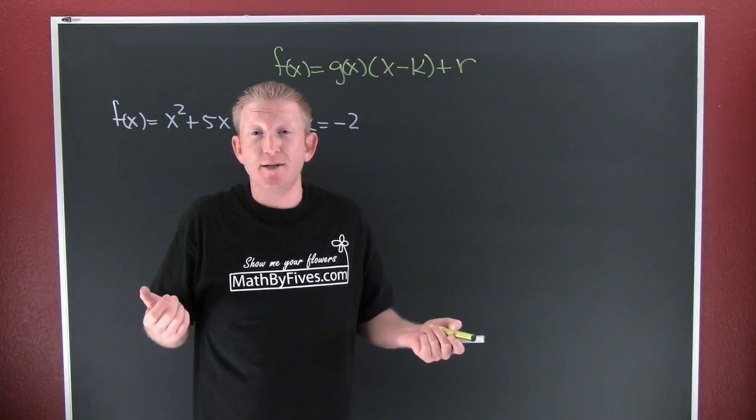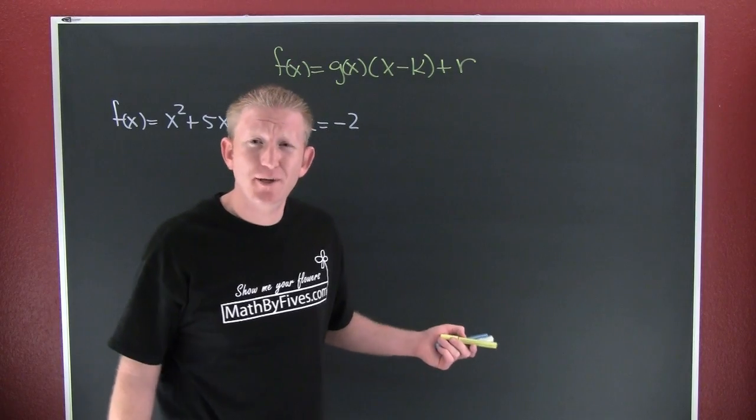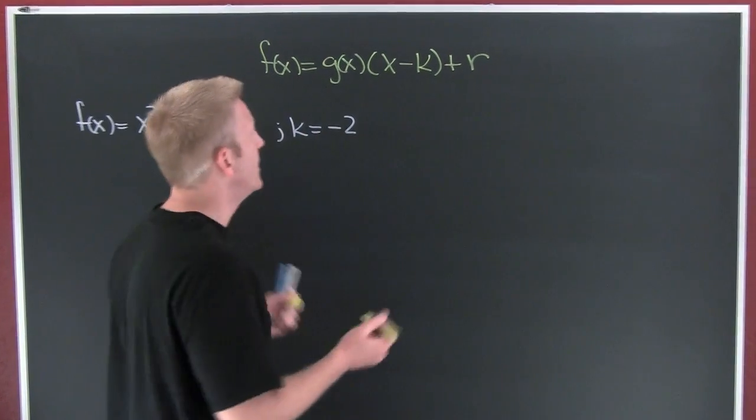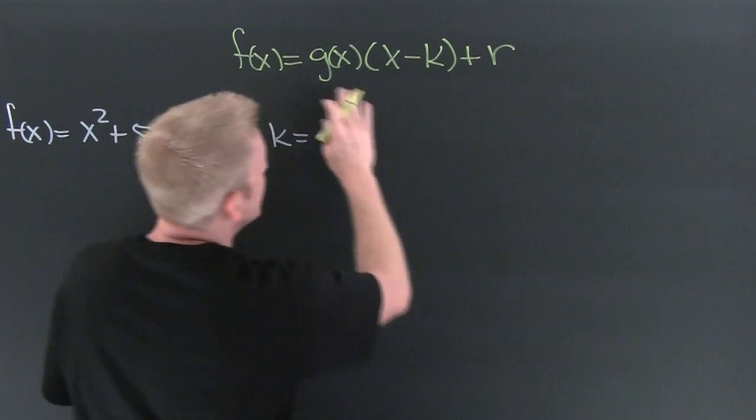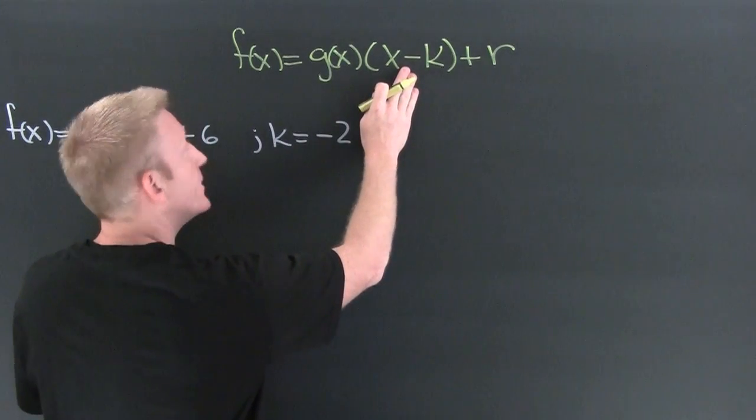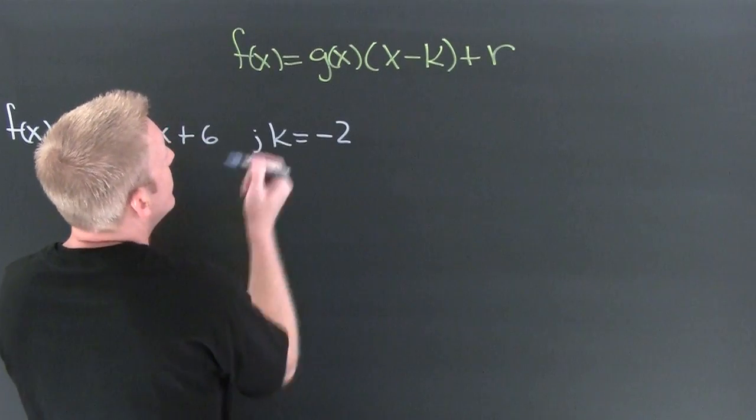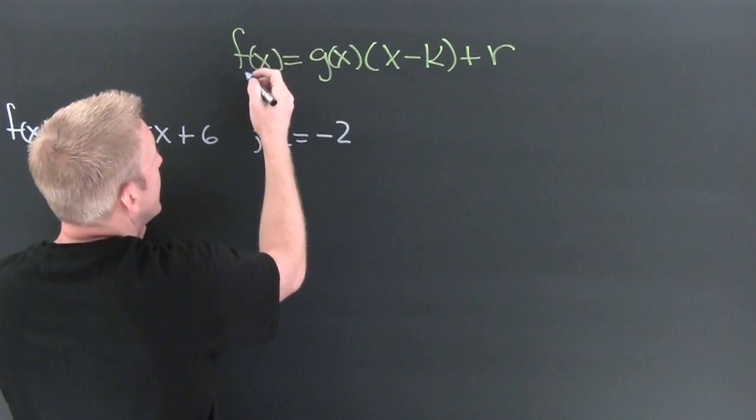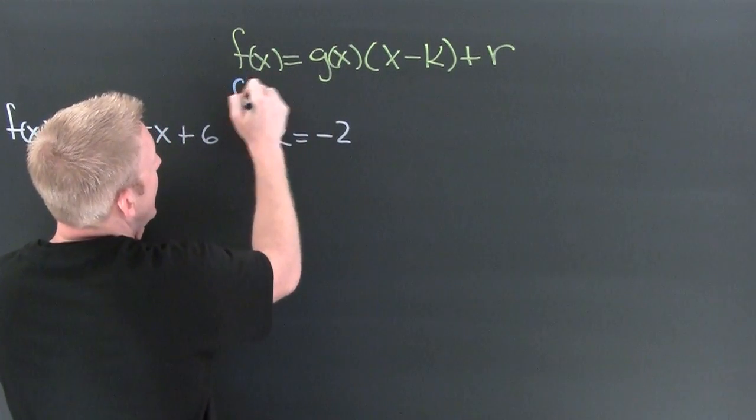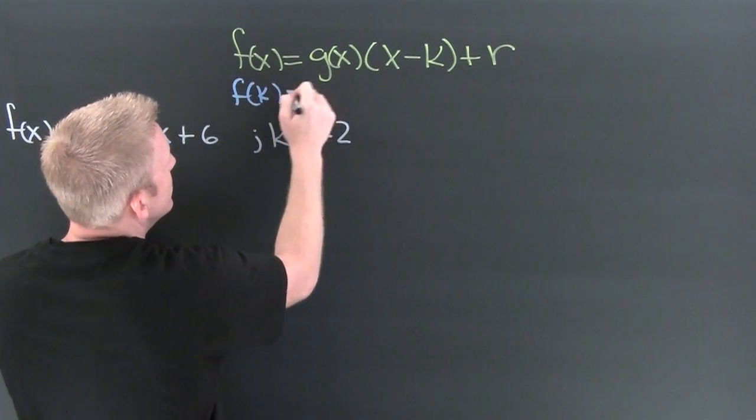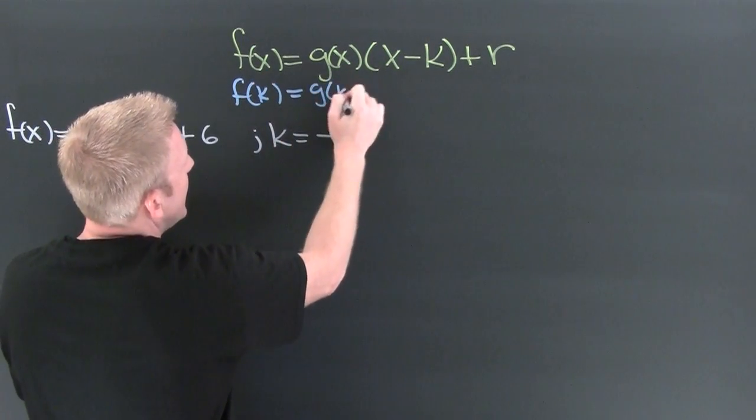Now that we have a definition, we can get into an example. Let me explain that definition just a little bit. A special case of that division algorithm is when we're dividing by a special linear factor. Upon that division, if we were to evaluate this at k, what would we have? We'd have f(k) is equal to g(k) times (k minus k) plus r.